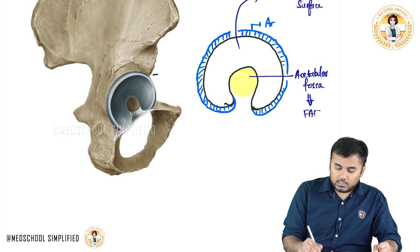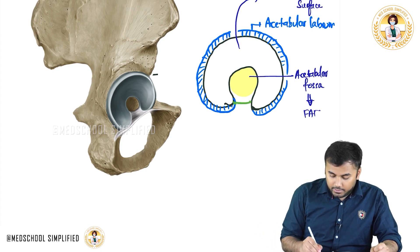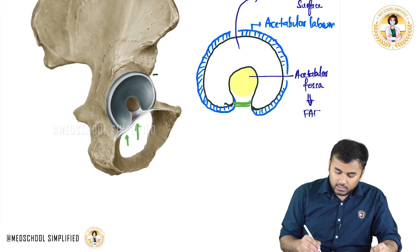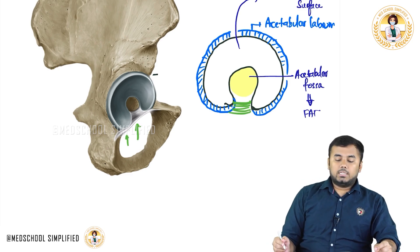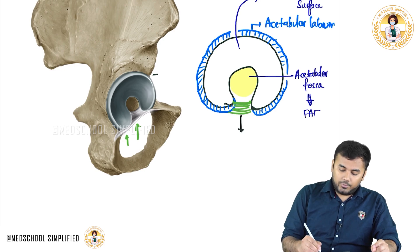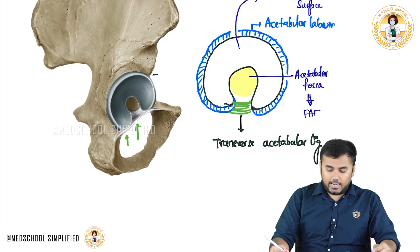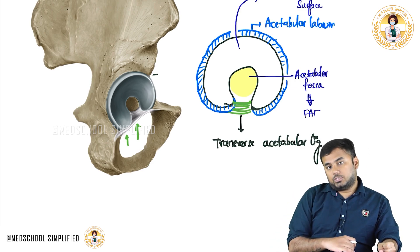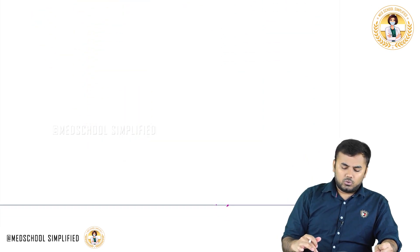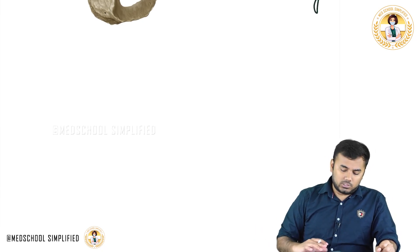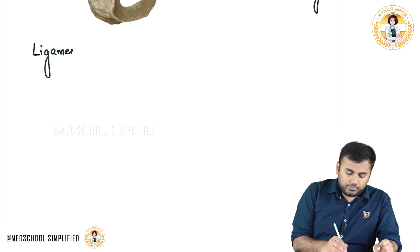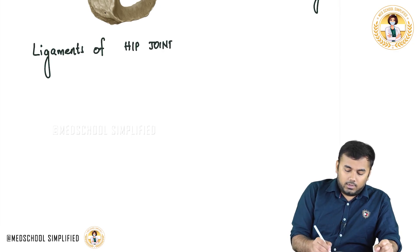This part surrounding the entire acetabulum is called the acetabular labrum. Next, there is a ligament here — you can appreciate it in white — this is the transverse acetabular ligament. Now let us write down the ligaments of the hip joint.